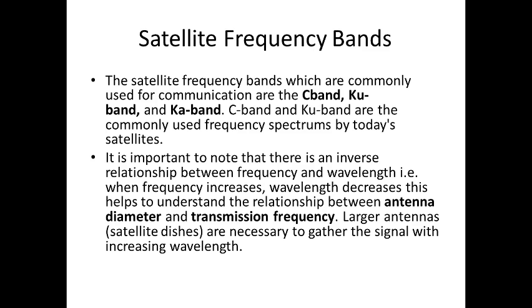Satellite frequency bands commonly used for communication are C band, Ku band, and Ka band. C band and Ku bands are most commonly used today. There is an inverse relationship between frequency and wavelength — when frequency increases, wavelength decreases. This helps understand the relationship between antenna diameter and transmission frequency. Larger satellite dish antennas are necessary to gather signals with increasing wavelength.